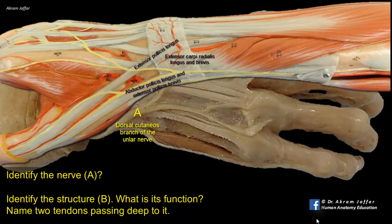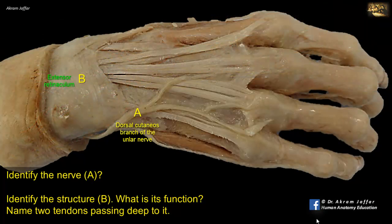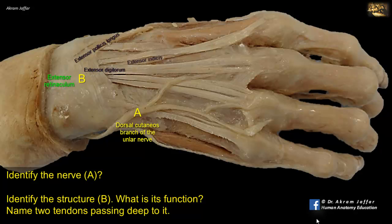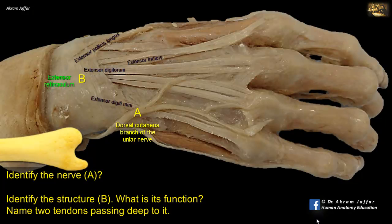Between this groove and the ulnar border of the radius is a shallow depression for the tendons of extensor digitorum and the deeper-lying extensor indicis. Over the radio-ulnar joint, the fifth compartment is located, transmitting the extensor digiti minimi. The sixth compartment, lastly, is in the groove near the ulnar styloid process and transmits the tendon of extensor carpi ulnaris.